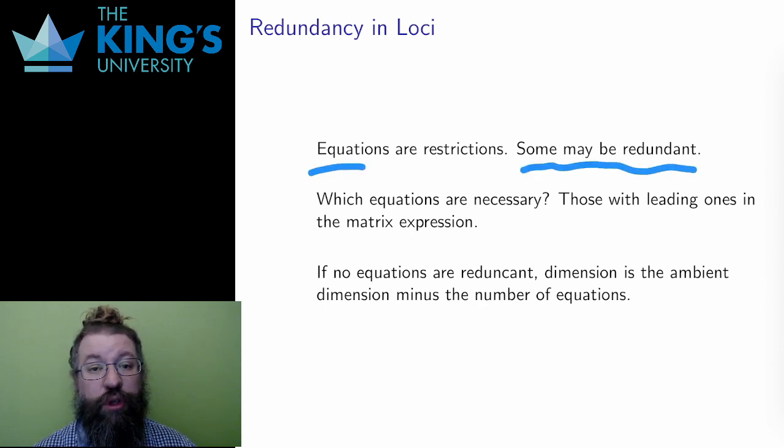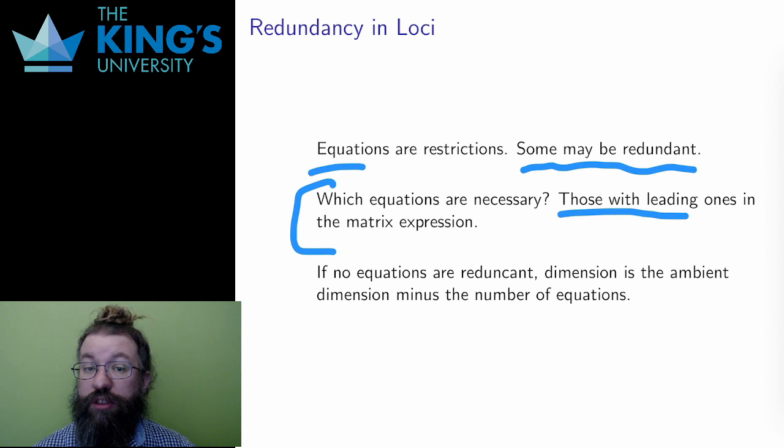In the matrix for a system of equations, each row corresponds to an equation. In the reduced form of the matrix, if there is a row of all zeros, then the equation that originally corresponded to that row, keeping track of row exchanges, was a redundant equation. It can be removed without changing the locus. The necessary equations are those equations that lead to rows with leading ones in the matrix.